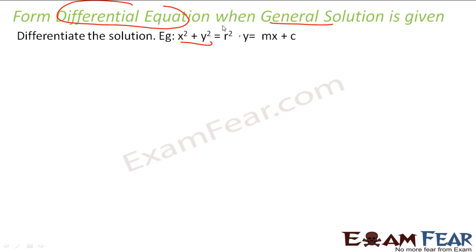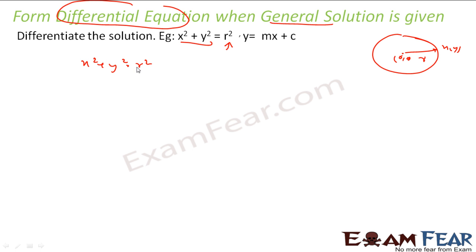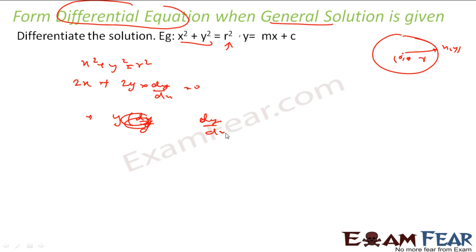For example, we have this solution given: x² + y² = r², which is all circles where the center is (0, 0), r is the radius, and (x, y) is any point. For this I have to find a differential equation. The key here is: if it has one extra variable r, I will differentiate one time. Differentiating x² + y² = r² gives 2x + 2y·(dy/dx) = 0, or dy/dx = −x/y.